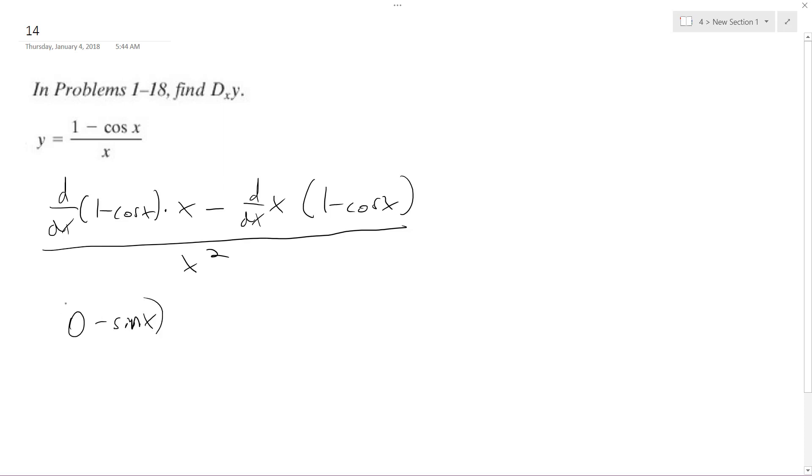And then all this times x minus 1 times (1 - cosine)... oops, cosine x. So we end up with... it should be plus, x times sine of x minus 1 plus cosine, because I'm distributing this minus sine, plus cosine of x.